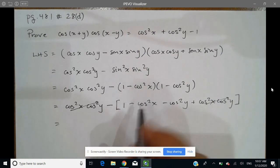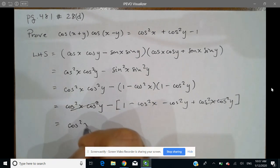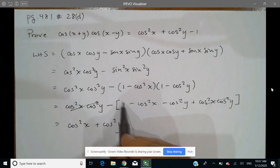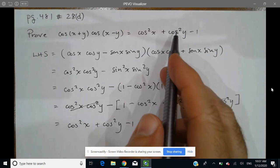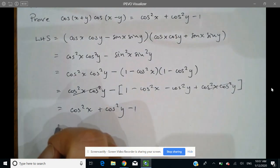well hey, look what I have, a positive cos squared x. Here we have a positive cos squared y. And then here we've got a minus 1, which is exactly what we have on our right-hand side.